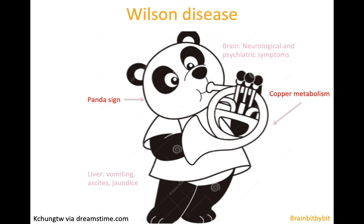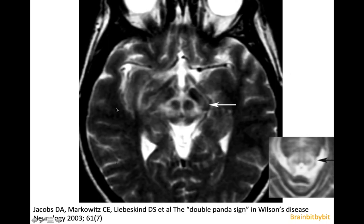A panda playing a copper trumpet illustrates two key features of Wilson's disease, also called hepatolenticular degeneration. In Wilson's disease there's a problem with copper metabolism, and on imaging you get a panda sign in the brainstem. This panda sign is caused by T2 hyperintensity in the tegmentum with normal signal intensity of the red nucleus, giving it the appearance of a panda where the cerebral peduncles are the ears.